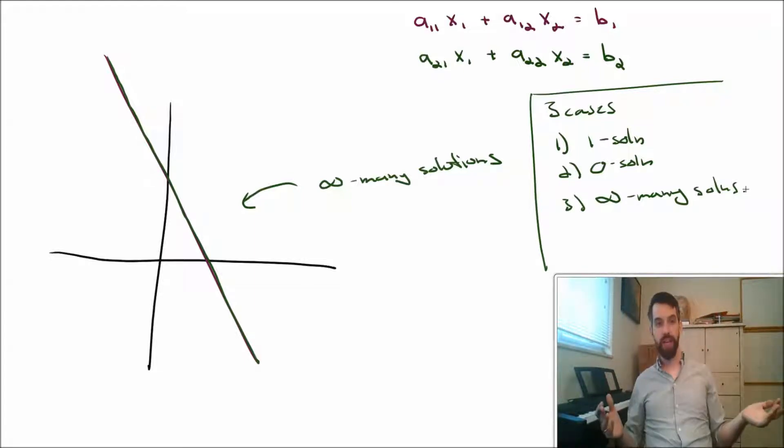Is there anything else? Is it possible to draw two lines in some way so that there's, say, two solutions, two intersection points? Or 17 intersection points? I don't think so. I can't think of any way I can take my lines and move them such that there's not either the one intersection point, the zero intersection point, or the infinitely many intersection points.